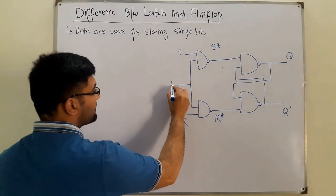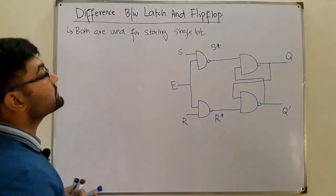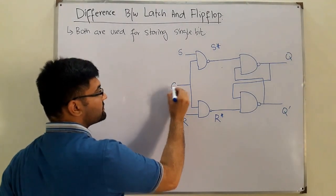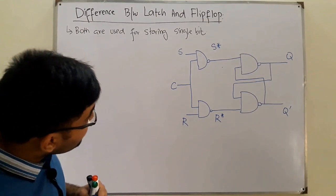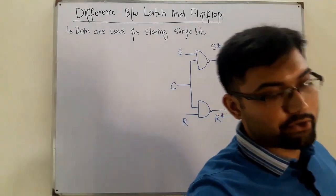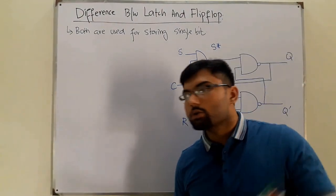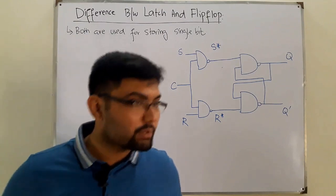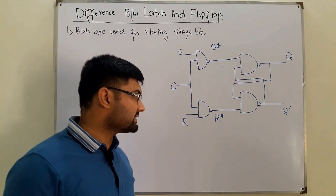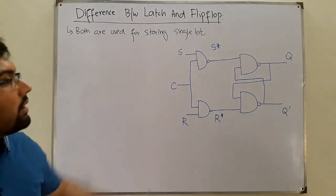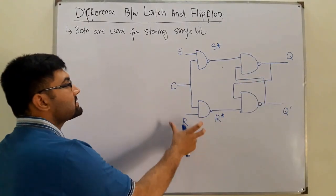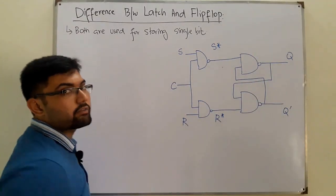This common input is essentially the enable signal, or the control signal — I'll represent it as C. Previously we didn't have it; the inputs S and R were connected directly. This circuit that you are seeing is an SR flip-flop, which we will cover in great detail in the next video.